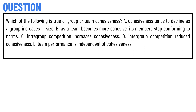Option A: cohesiveness tends to decline as a group increases in size. Option B: as a team becomes more cohesive, its members drop conforming to norms. Option C: intergroup composition increases cohesiveness. Option D: intergroup composition reduces cohesiveness.